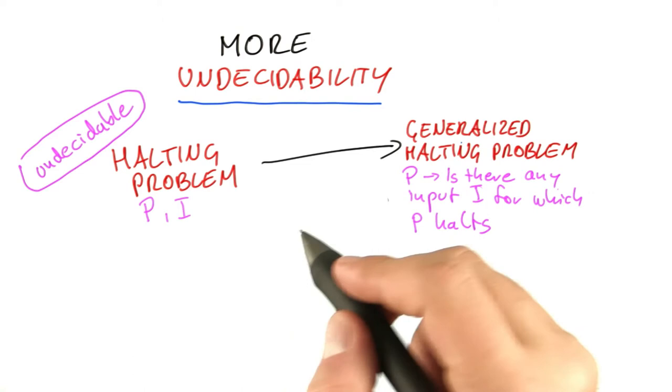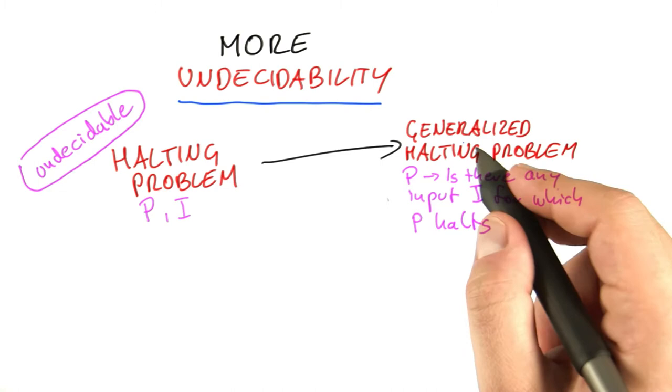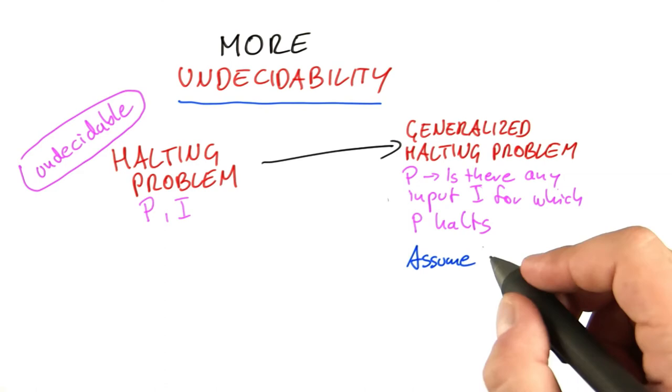And then we'll look at other problems and you can show that they are undecidable. So the proofs always work in a very similar fashion. You again start out with an assumption and then lead that assumption to a contradiction. The initial assumption is that we had an algorithm or a program that can decide the generalized halting problem.